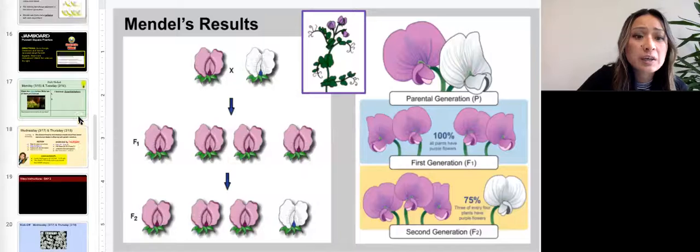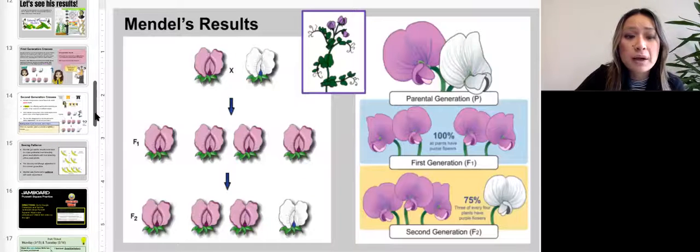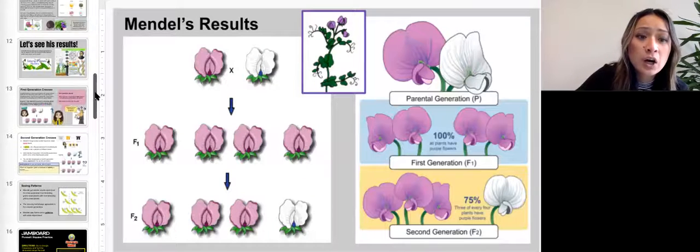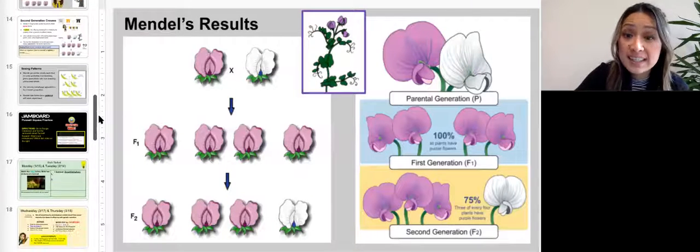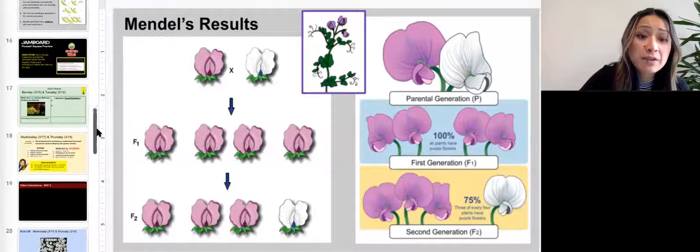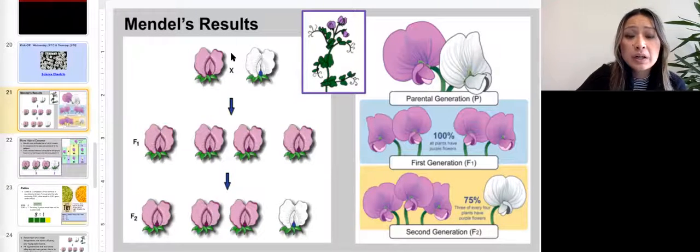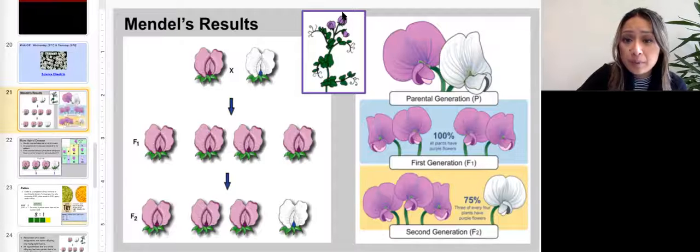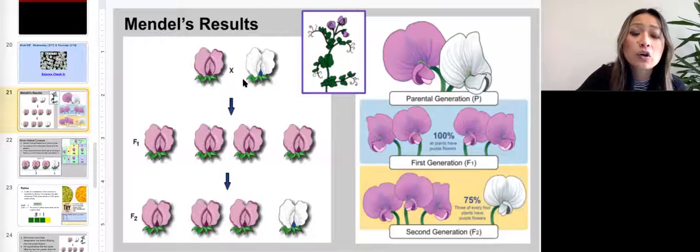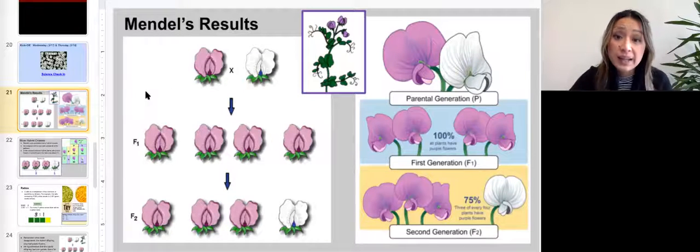So slide 20 has your check-in. And so last time we were talking about the father of genetics, Gregor Mendel and what kind of experiments he did to pave the way for genetics. And so here we've got Gregor Mendel crossing and breeding plants.